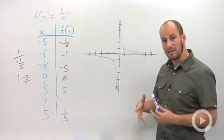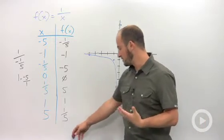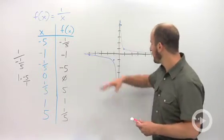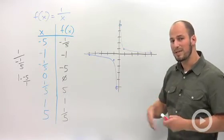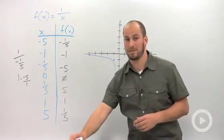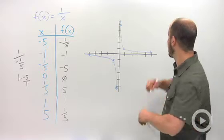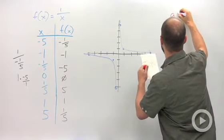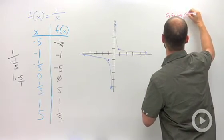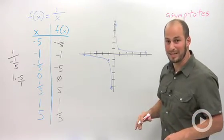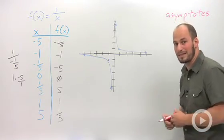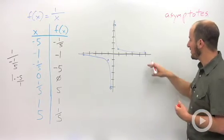What you notice is we have two pieces. It's divided by the x-axis and the y-axis, and what this is actually called are asymptotes. I'm going to write that up there because it's a pretty hard word to say and spell - asymptotes. I don't really know why the p is in there; you don't really say it, but it's how you spell it.